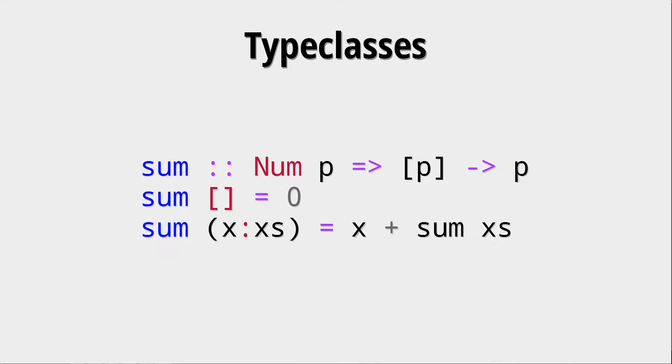Just one side note. When you use a function like this plus in another function, this type constraint propagates through. I think we will look at type inference in another video. But this is just something to keep in mind.